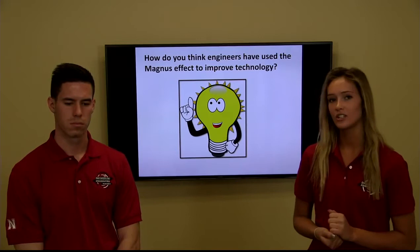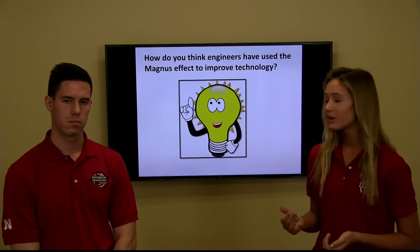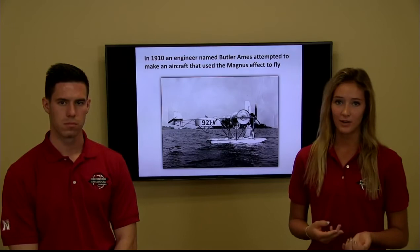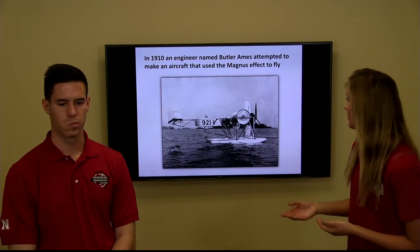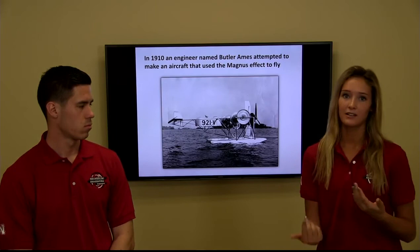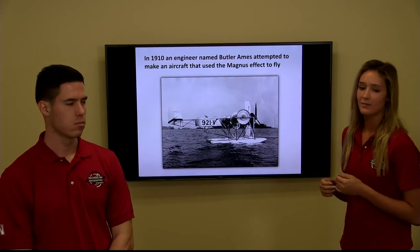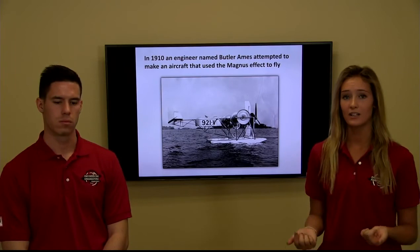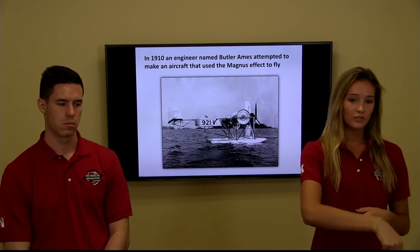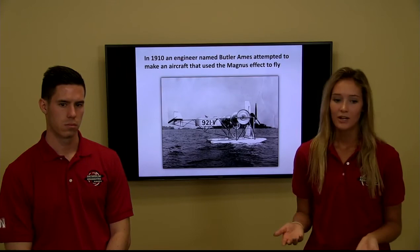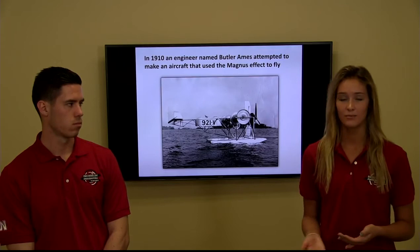The Magnus effect is not only used in recreation but also in engineering applications. One of the earliest attempts was by US congressman and engineer Butler Ames in 1910, who tried to make an airplane using the Magnus effect to fly. Rotating cylinders gave the plane a lift force while a propeller in the front provided forward velocity. The problem was the rotating cylinders also caused more air drag, so when the plane slowed down it went straight down rather than gradually descending. The plane was flown once and crashed, but failure is a part of engineering — you go back to the drawing board and try again.